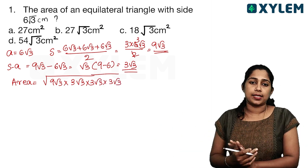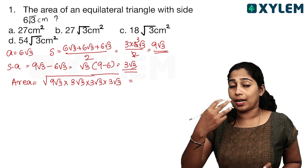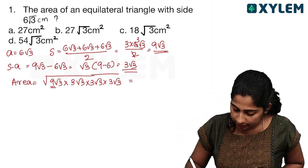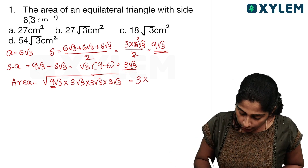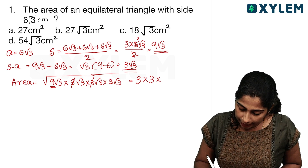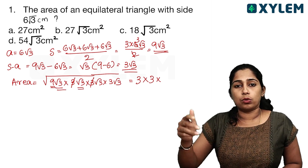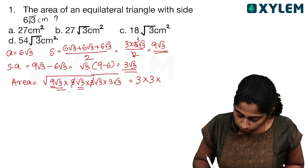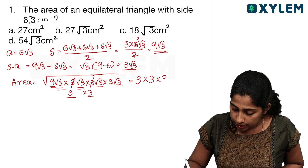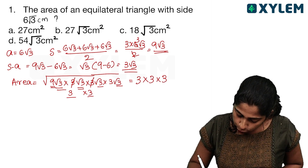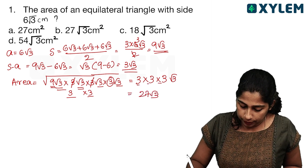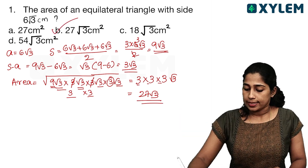Now I have to evaluate this expression. Using square root of 9√3 into 3√3 three times. Root 3 into root 3 is root 3 squared, which equals 3. So root 3 into root 3 is 3. The final answer will be 27√3 centimeters squared. Yes, 27√3 cm² is the answer.